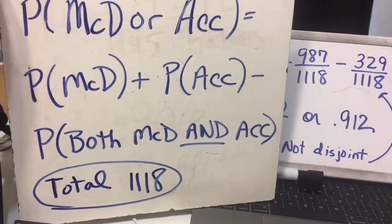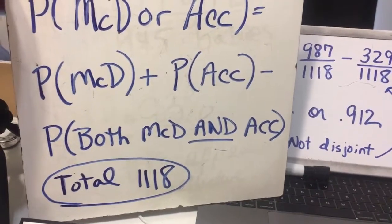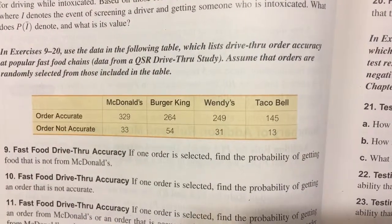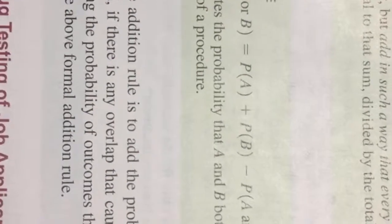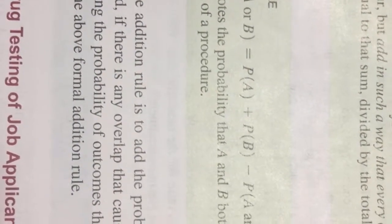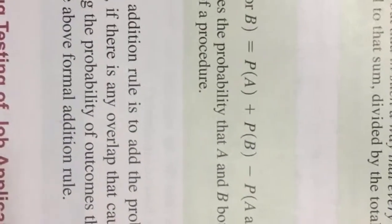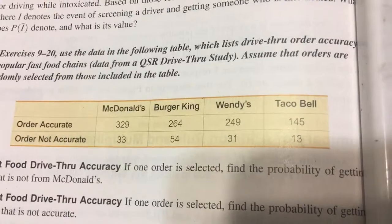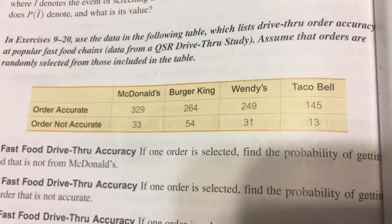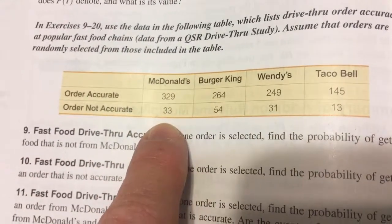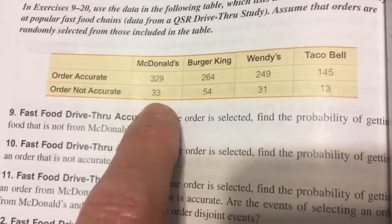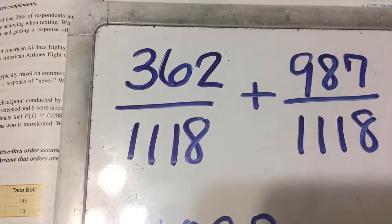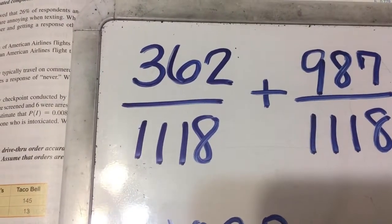Now, the first thing we had to do was total up all of the values in the chart, which is 1,118. Here on page 148 of your book is the formal addition rule: probability of A plus probability of B minus the probability of both A and B happening at the same time. Looking at the chart, the probability of McDonald's is 329 plus 33 all over 1,118, which gives us 362 divided by 1,118.